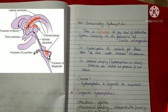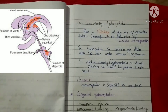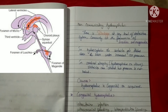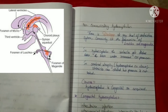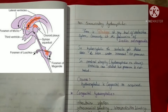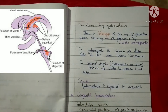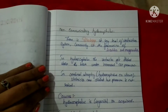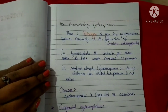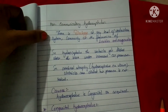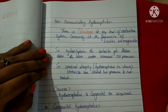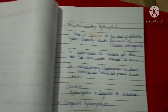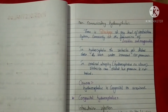The blockage occurs mainly at the foramen of Luschka and the foramen of Magendie. The foramen of Luschka is present in the inferior part of the fourth ventricle, whereas the foramen of Magendie links the fourth ventricle to the cisterna magna. In hydrocephalus, the ventricle gets dilated above the level of the block and the CSF pressure increases. In cerebral atrophy — hydrocephalus ex vacuo — the ventricles are dilated but the pressure is not increased.